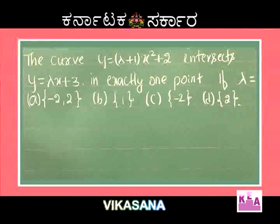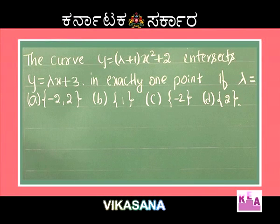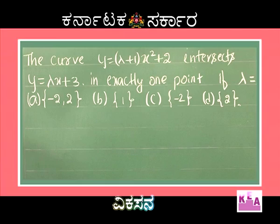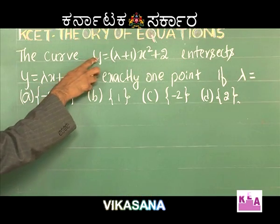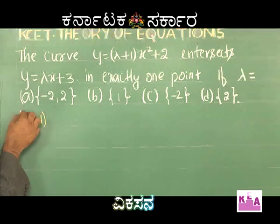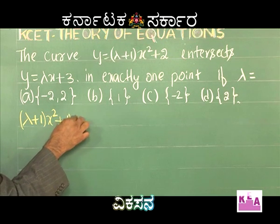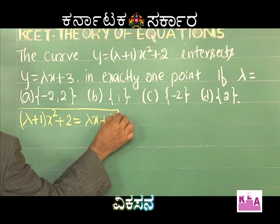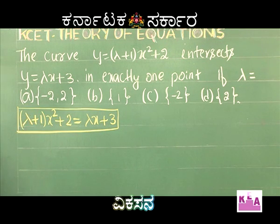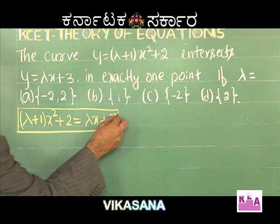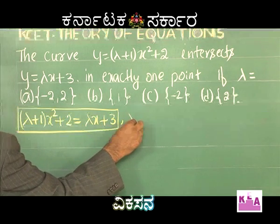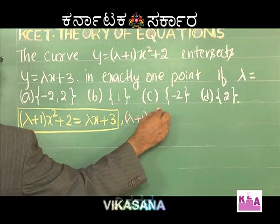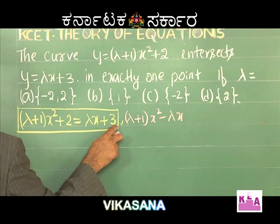Problem: the curve y = (λ+1)x² + 2 intersects y = λx - 3 at exactly one point. Options: λ = {-2, 2}, λ = 1, λ = -2, or λ = 2. Since the curve meets the line at exactly one point, the line is a tangent. Equating both: (λ+1)x² + 2 = λx - 3, which gives (λ+1)x² - λx + 5 = 0. This quadratic must have equal roots, so b² = 4ac: (-λ)² = 4(λ+1)(−1)... let me set up correctly.